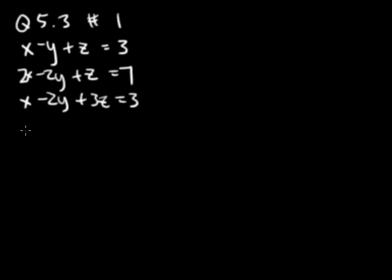The first step is we're going to put this into the augmented matrix form. So, 1 -1 1 3, 2 -2 1 7, 1 -2 3 and 3.